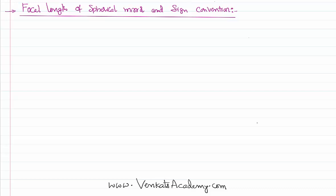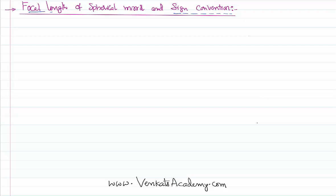Hello everyone, welcome to this video lesson. In this video lesson we would like to talk about the sign convention — how do you consider the distances, what is focal length, whose focal length shall be treated as positive and whose focal length shall be treated as negative. Whenever there is a spherical lens, a convex lens, a concave mirror, or a convex mirror, we apply this convention.